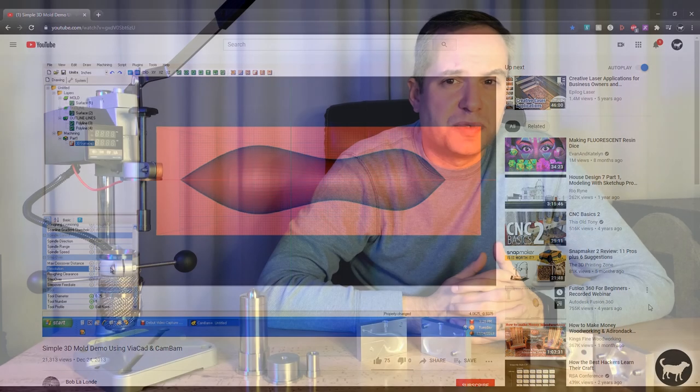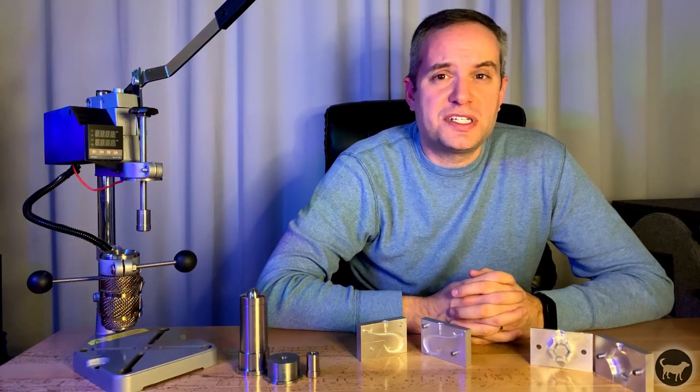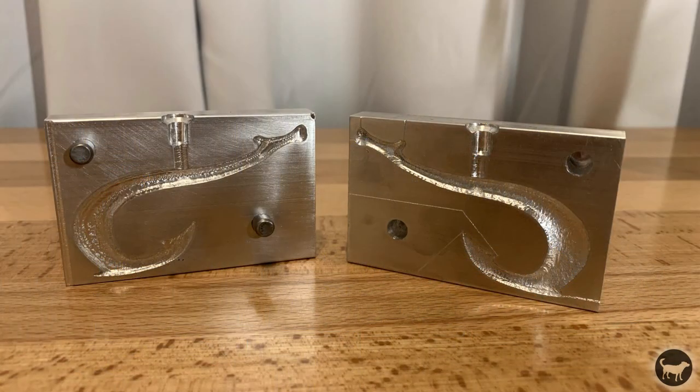Just a few tips on aluminum molds. First is that you want to design your mold with holes for the registration pins that I mentioned before to keep both sides aligned.